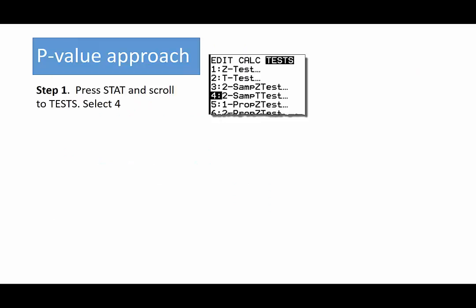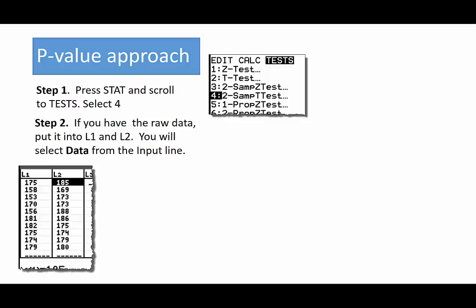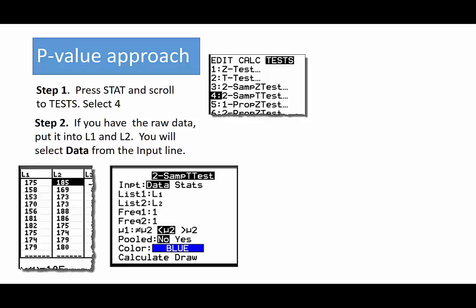P-value approach. We typically use the calculator or a computer to crunch this up. Step one is press STAT and scroll to TESTS and select number four, the two-sample t-test. Step two, if you have the raw data, and we do, and you already should have it in there from a previous exercise, you put it into L1 and L2, you select Data from the input line.